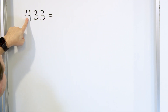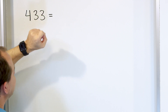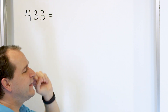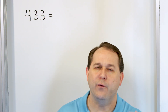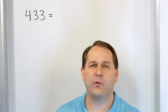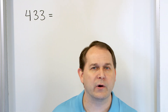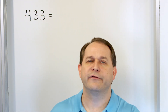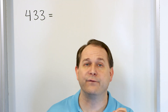We have a four in the hundreds place, a three in the tens place, and a three in the ones place. Now you know that this 4 does not have a value of 4. We know that that 4 actually means 400. The number here is 433, and that 4 in the hundreds place really means 400.